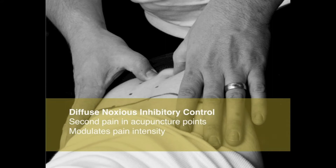The third mechanism is the diffuse noxious inhibitory control, also known as the DNIC system. The DNIC system consists of creating a second pain anywhere in the body, and this mostly modulates pain intensity.